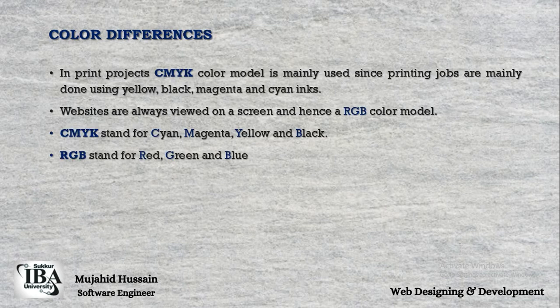Color differences. In print projects, the CMYK color model is mainly used since printing jobs are done using cyan, magenta, yellow, and black inks. Websites are always viewed on screen and hence use the RGB color model. CMYK stands for cyan, magenta, yellow, and black. RGB stands for red, green, and blue.